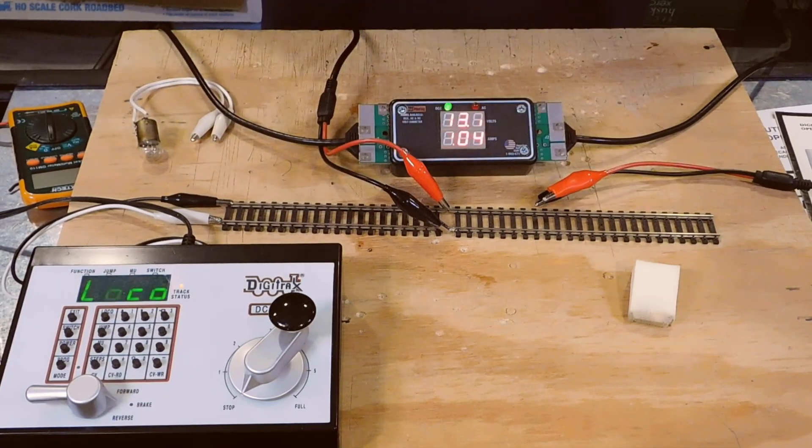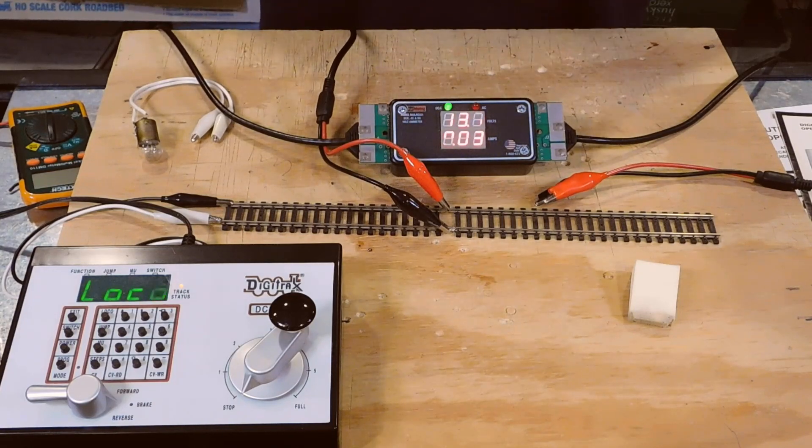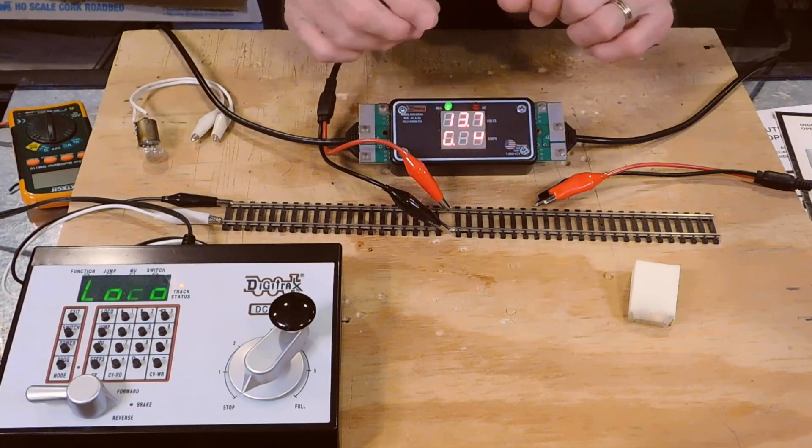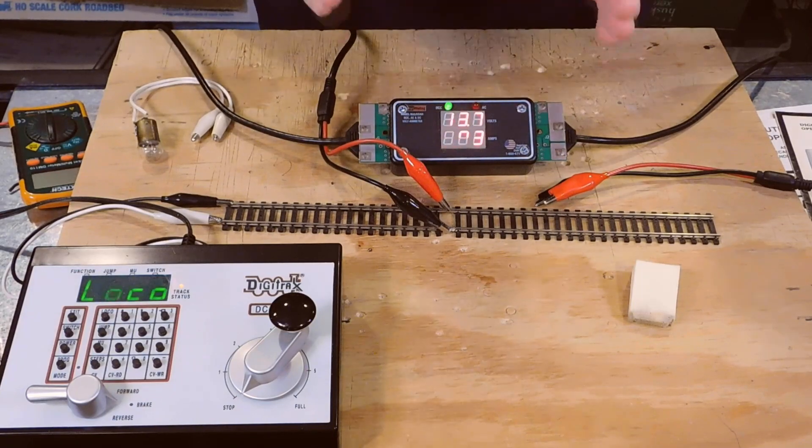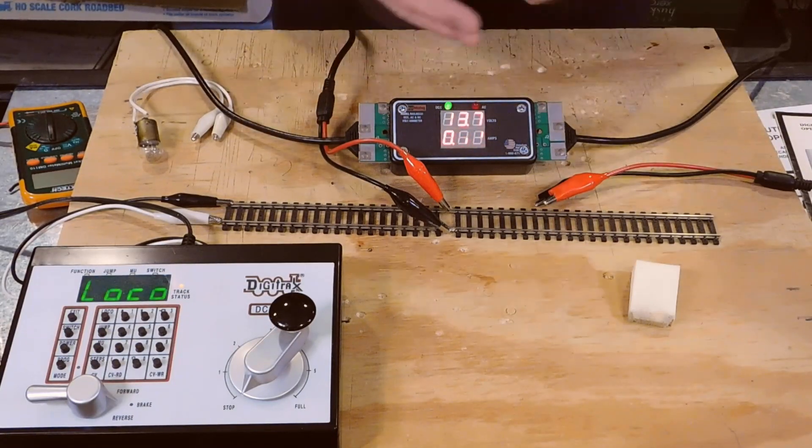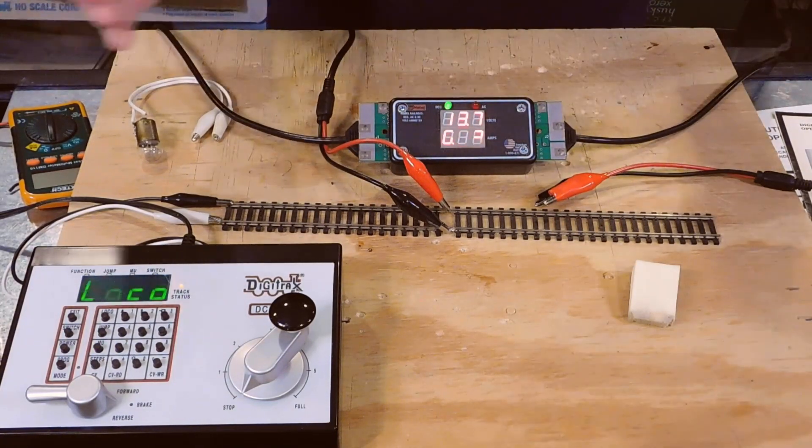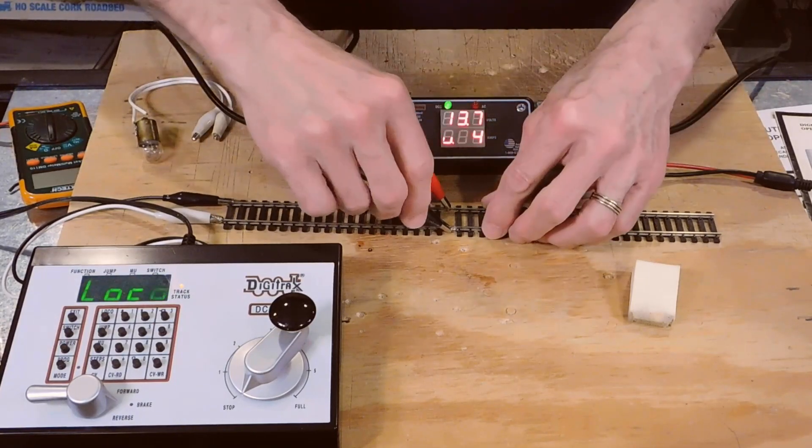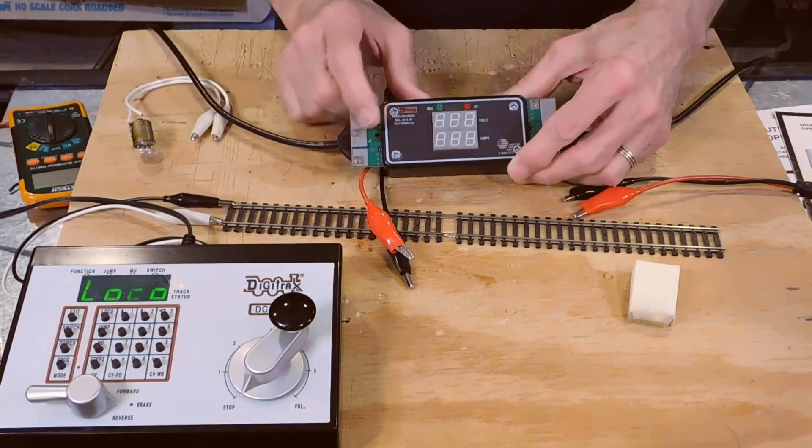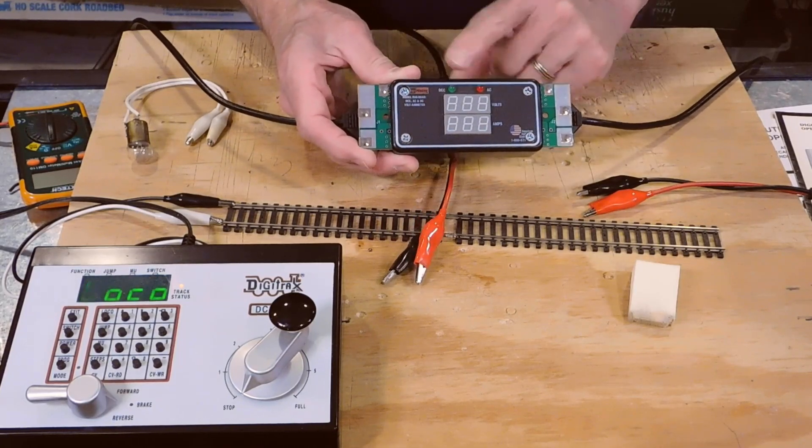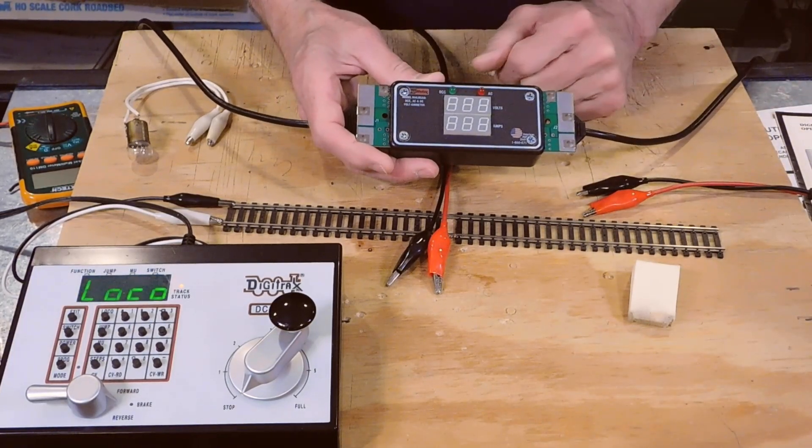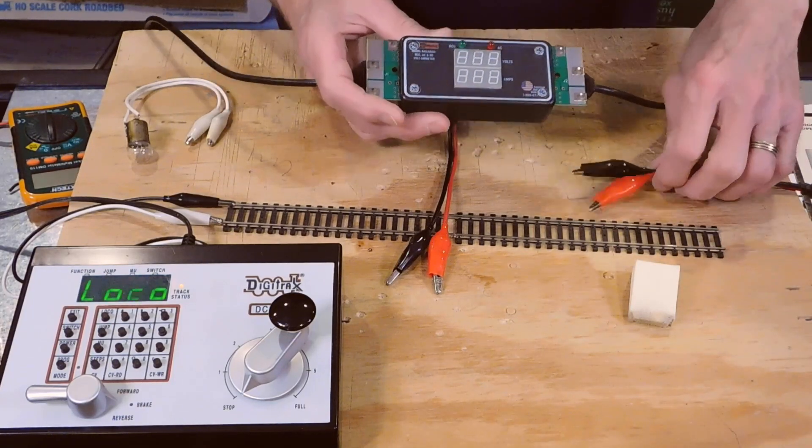More recently, a company called DCC Concepts, which is located in Yorkshire, England, has come out with a device that looks almost identical to this, and it does the same thing. Theirs is designed specifically for being mounted on a track fascia somewhere, or next to your command station or booster, and it will allow you to actually make these measurements. This particular one comes in several different varieties. You can get it like this, you can get a version that has a 9-volt battery connection internally so it can be used as a standalone voltmeter, and you can get it so it's fascia mounted.